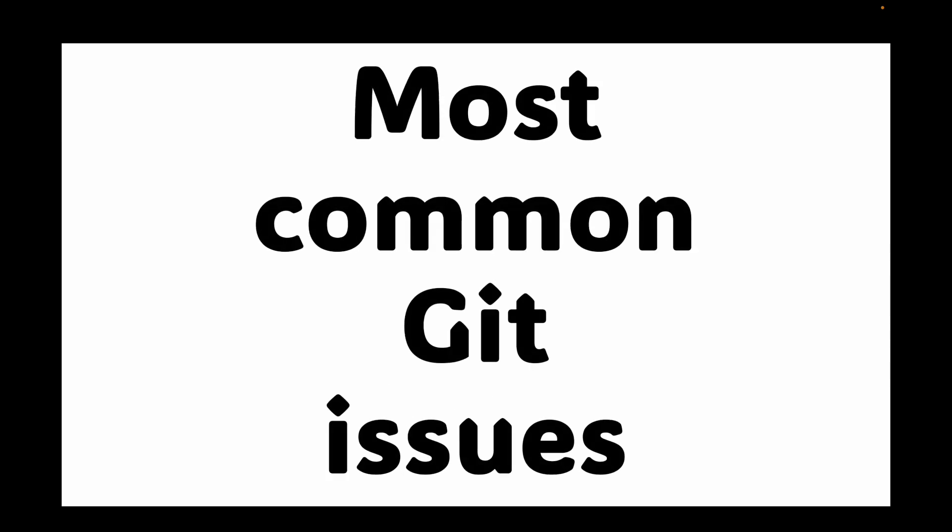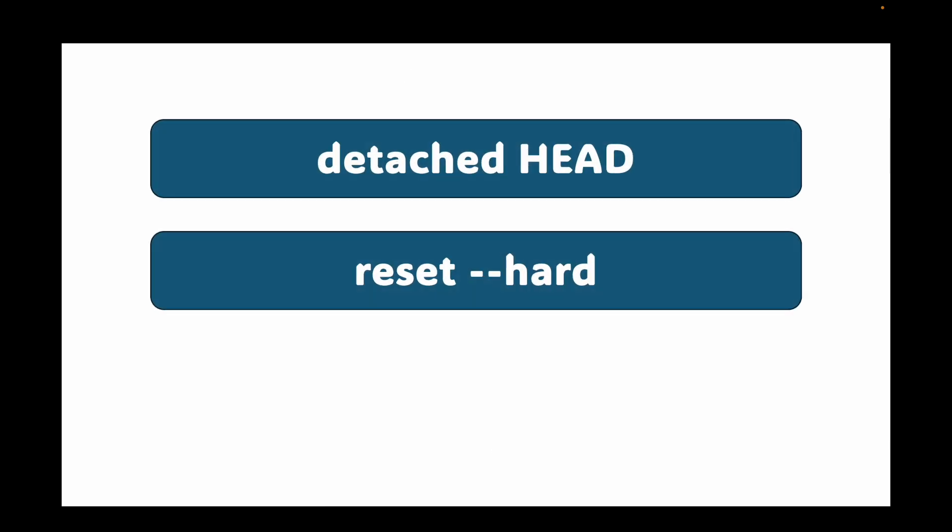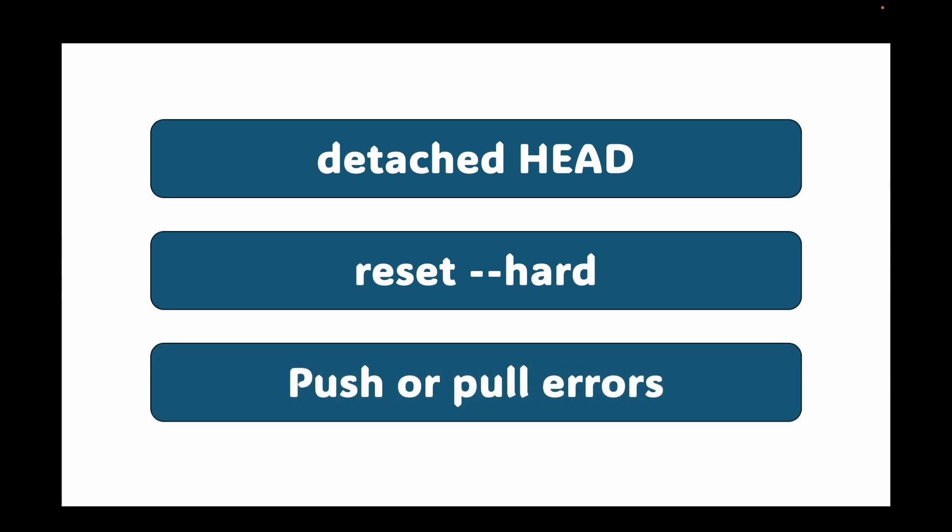Hello and welcome back. In the last session we looked at how we can clean up repositories — cleaning untracked files and pruning unused branches. In today's session we are going to look at some of the most common git issues. As a developer you are going to encounter git problems, whether it's a detached head state, an accidental reset --hard, or a push or pull error.